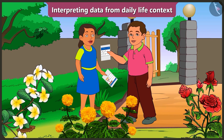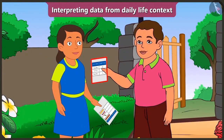I mean to collect the data. But the data about all the blossomed flowers is already filled in this table. That's why you don't need to count the flowers one by one in the garden. Because whatever details are already filled in this table about the flowers, you just need to understand that data.